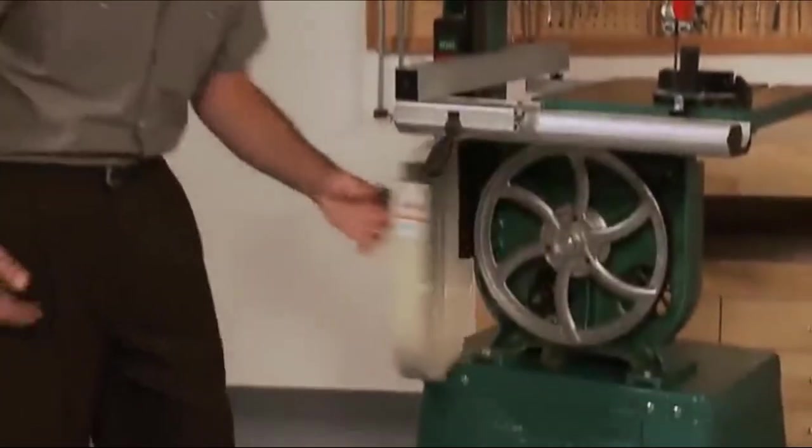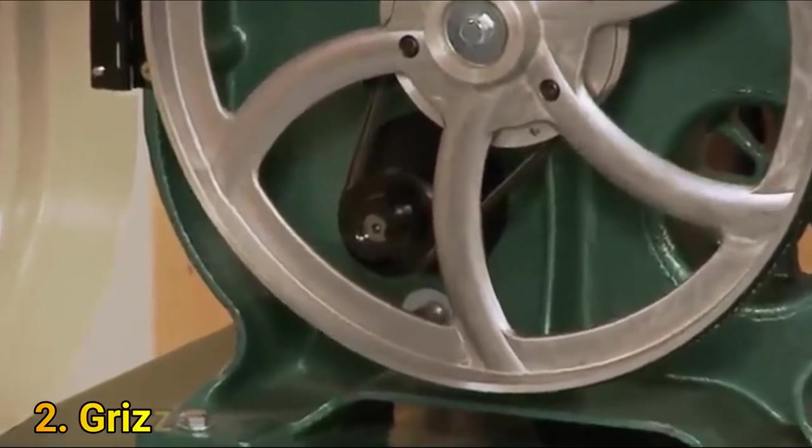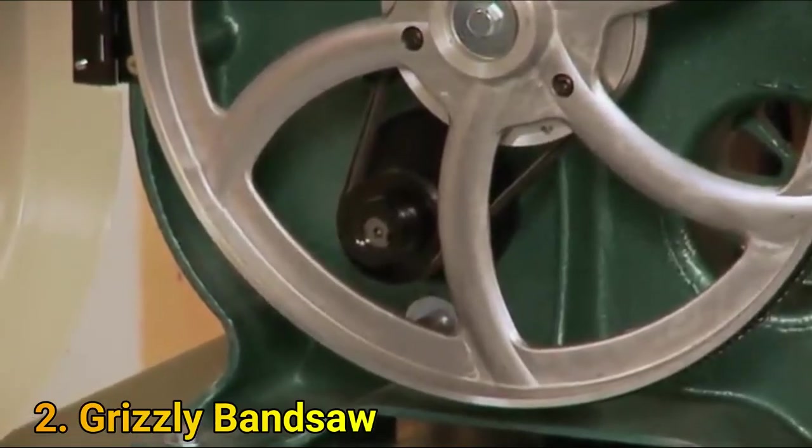This is a two speed saw, with the blade speeds being 1,500 and 3,000 feet per minute. Speed changes are derived using a step pulley, and as you can see, we use a serpentine belt, which reduces vibration substantially.